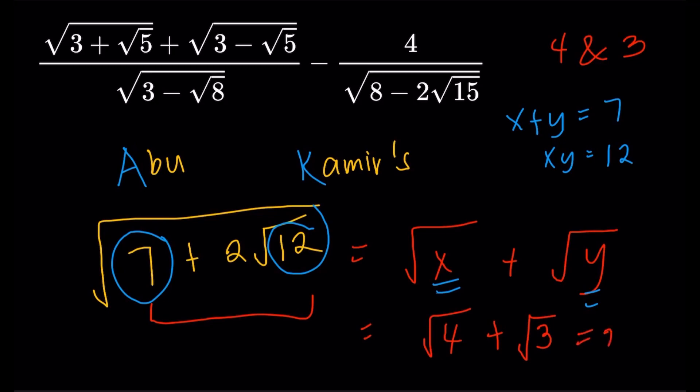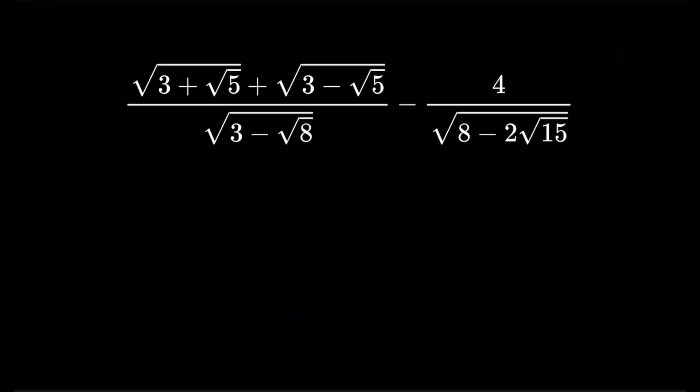We've successfully eliminated a nested square root. Obviously we can simplify further: square root of 4 is 2, so the result is 2 plus square root of 3. That's the technique we'll apply to simplify the radicals in the denominator.